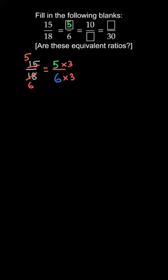1st fraction में है 15 divided by 18 और 3rd fraction में 10 दिया है, denominator में पता नहीं क्या आएगा। यहां पर पता है कि 10 के साथ क्या multiply करने पर 15 आएगा — 10 के साथ 3 by 2 — लेकिन यह directly सोचना बहुत difficult है।